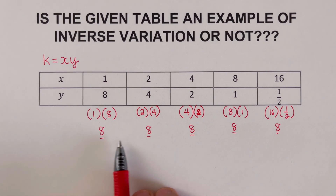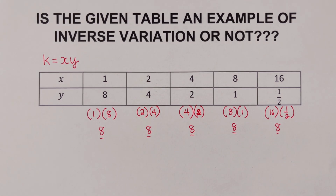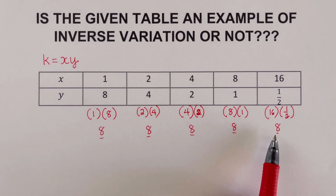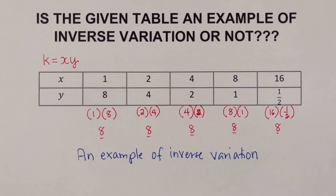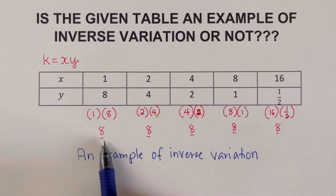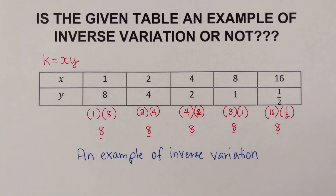Since the product of x and y always equals 8 for every row, the proportionality constant k equals 8. We can say this is an example of an inverse variation, because for an inverse variation the product of x and y must be a constant.